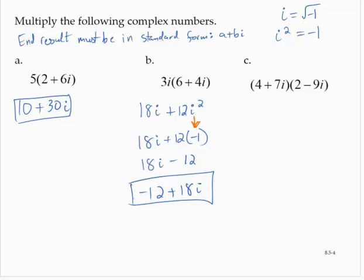Exercise C asks us to multiply 4 plus 7i by 2 minus 9i. Foiling, which is basically just an extended distributive property, 8 minus 36i plus 14i minus 63i squared.